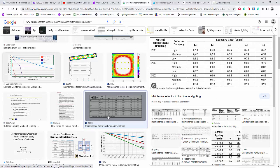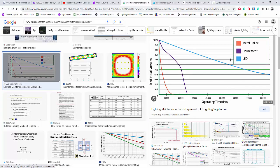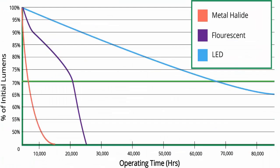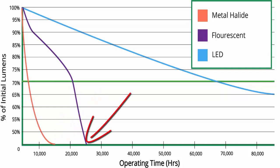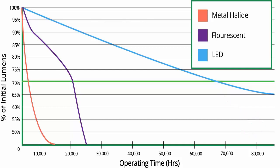You can see these graphs showing metal halide, fluorescent, and LED, along with the operating hours of each lamp. The lifespan for metal halide is up to around 15,000 hours, fluorescent is about 25,000 hours, and LED is more than 80,000 hours.